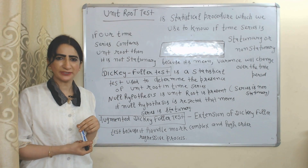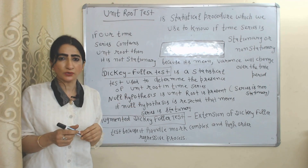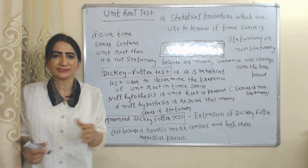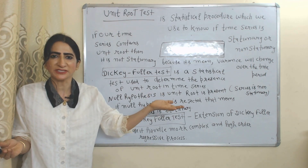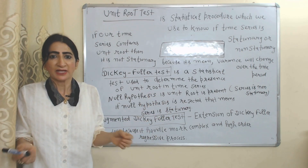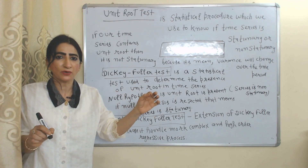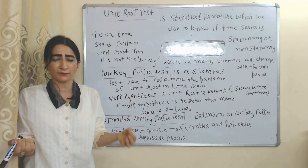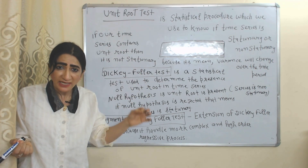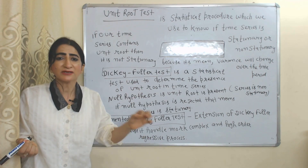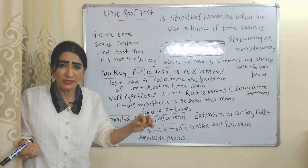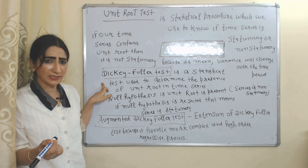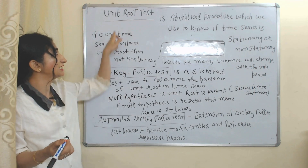We use the unit root test in order to know whether our time series is stationary or non-stationary. If our time series contains a unit root, that means our time series is not stationary — its mean and variance change over the time period.